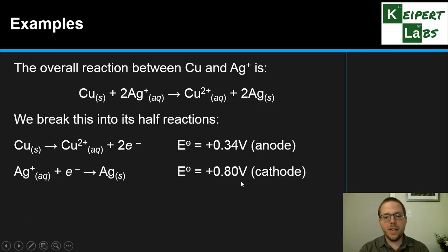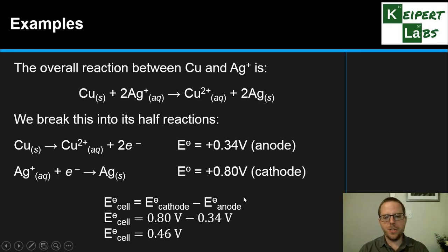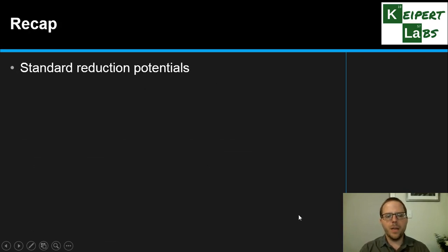We look at the values and say the more positive one will reduce and the less positive one or more negative one will oxidize. In this case they're not negative numbers, they're both positive. It's just this one is more positive, so it will reduce and therefore is the cathode. We substitute into our formula: cathode minus anode, 0.80 minus 0.34, so we get a cell voltage of 0.46 volts.